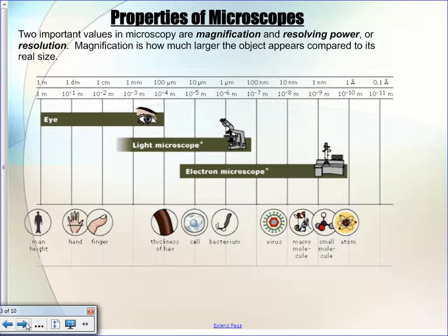For an electron microscope, we can go down even further. Some of them can resolve down to even a small molecule — they can't see much detail about it, but they can resolve down to basically a molecule being kind of a ball, or maybe a couple of balls. So that gives you some idea of the resolving powers.